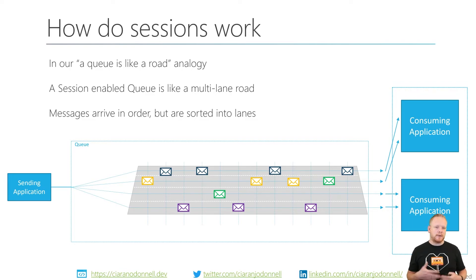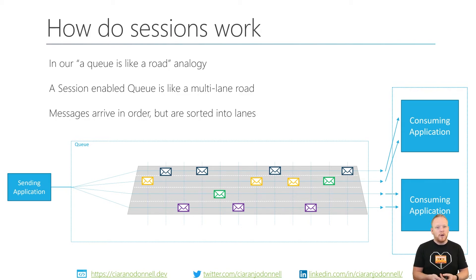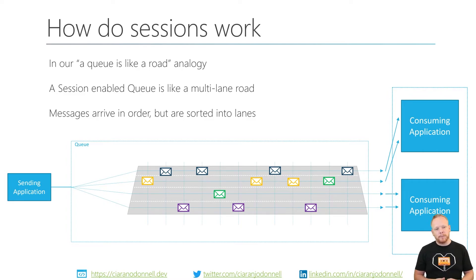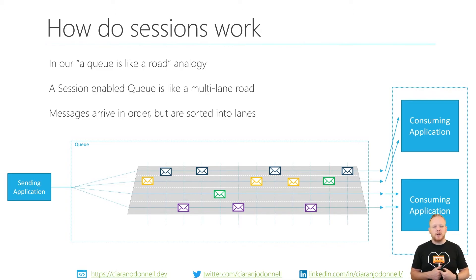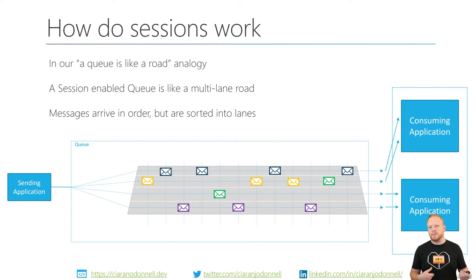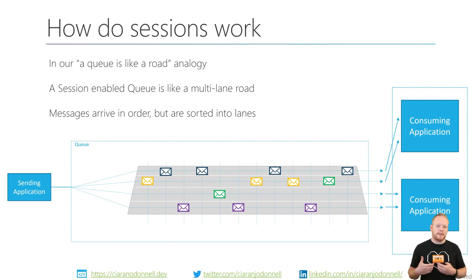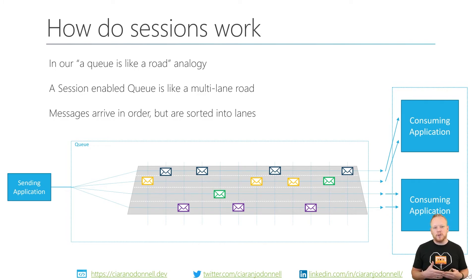What we're able to do is create more than one consuming application. Rather than randomly taking the next message from the front of the queue — which could be about anything — each consumer will get allocated sessions, and they'll make sure they get the next available message in the sessions allocated to them. So while the first consuming application is processing a blue message, the second consuming application won't work its way through the queue and get the next blue message and potentially process it out of order. With competing consumers, sessions make sure that messages still get processed in order, because a particular session of messages will only ever be processed by one of the consuming applications.